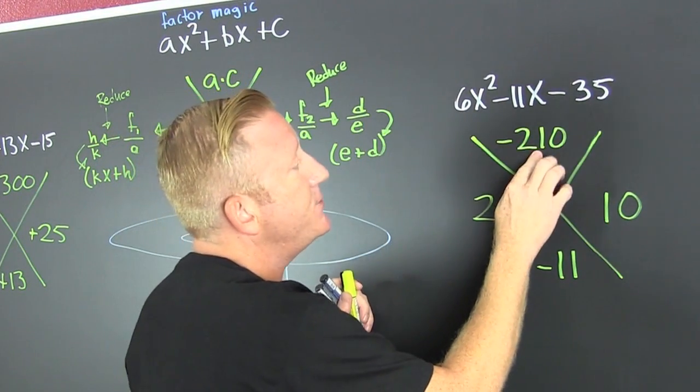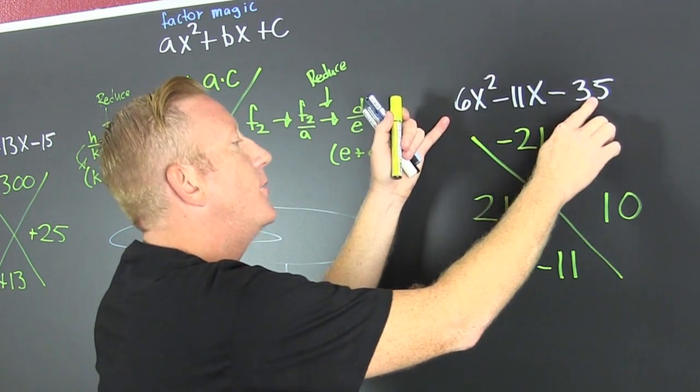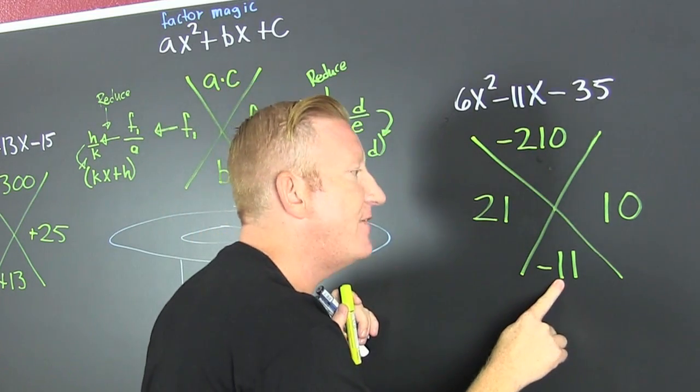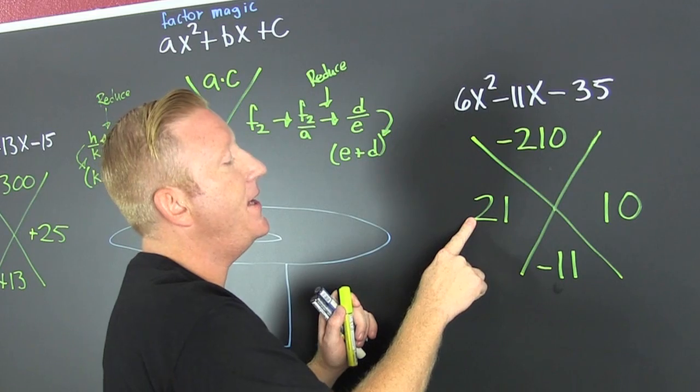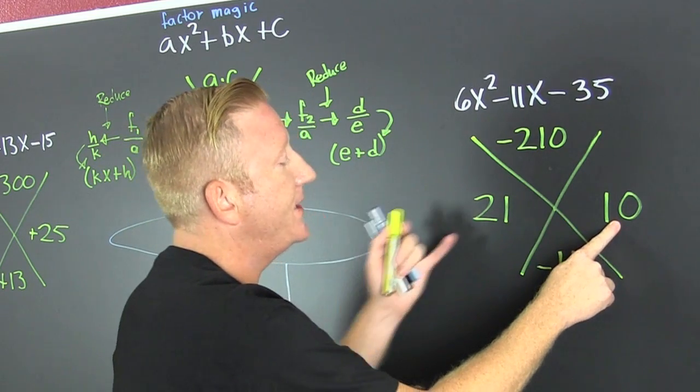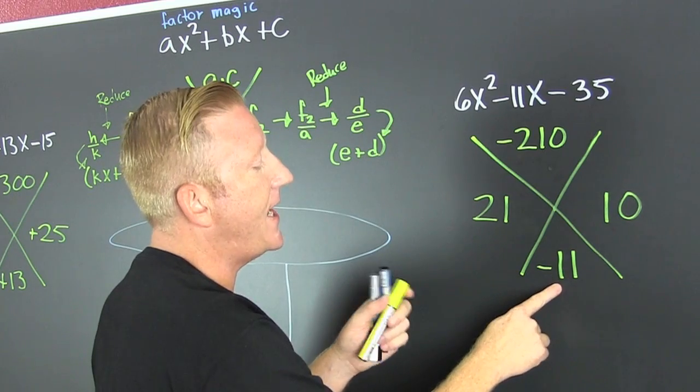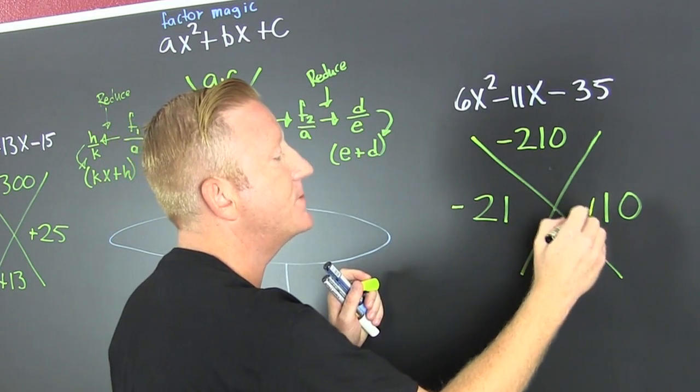So a times c, that's minus 210. Check it. Go ahead, multiply that out. So we're looking for the factors of 210 that subtract to be 11. So then I get 21 and 10 because when I multiply these guys, I get that. And when I subtract them, I get that. That being negative says that this is negative and that's positive.